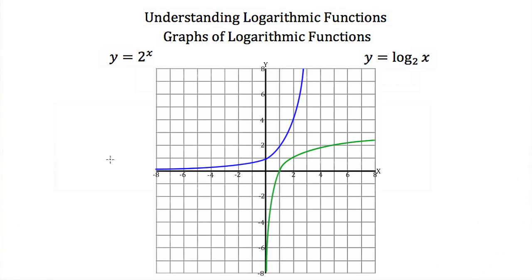Now let's talk about the graphs of logarithmic functions. A logarithm is usually considered the inverse of an exponential. So here in blue we have the graph y is equal to 2 to the x. The inverse of this function would be y is equal to the log base 2 of x, graphed here in green. Because these functions are inverses of one another, they have to be reflected across the line y is equal to x, so every point on the exponential graph can be reflected across this line to get every point on the logarithm graph.